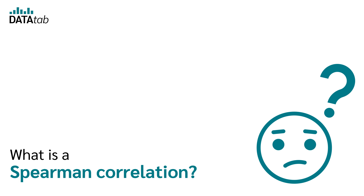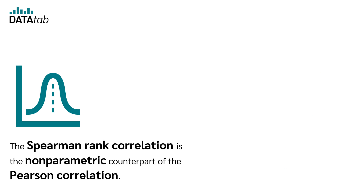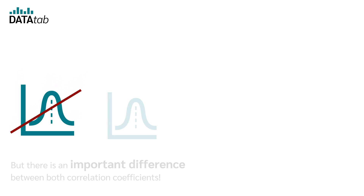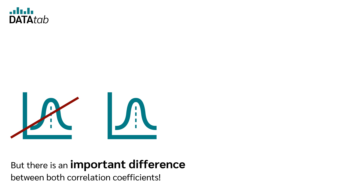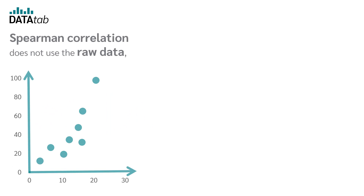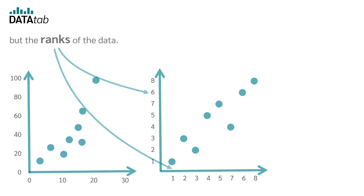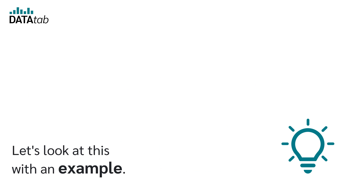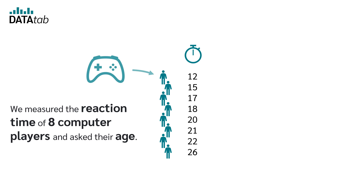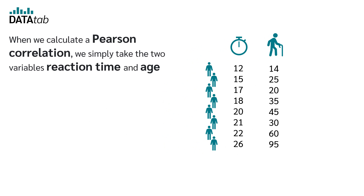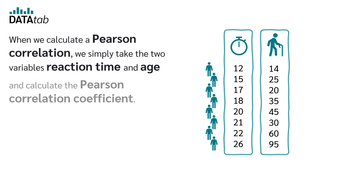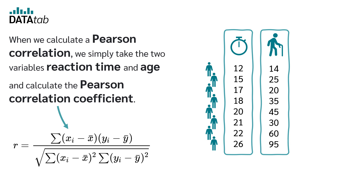The Spearman-rank correlation is the non-parametric counterpart of the Pearson correlation, but there is an important difference. Spearman correlation does not use the raw data, but the ranks of the data. For example, we measure the reaction time of 8 computer players and ask their age. When we calculate a Pearson correlation, we simply take the two variables reaction time and age and calculate the Pearson correlation coefficient.